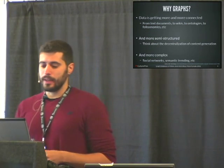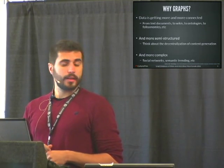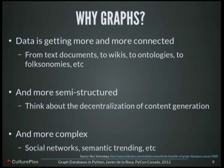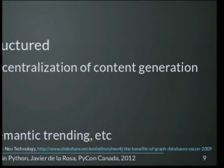Why graph? To understand why graph, I'm going to use the three trends identified by Emil Eifrem. Emil Eifrem is the CTO of Neo Technologies, the company behind Neo4j, probably the most famous graph database right now. He said that data is getting more and more connected, which is true, because at the beginning in the 90s we had text documents, then we moved to wikis, to ontologies, to tags, to the semantic web, and now we have graphs.